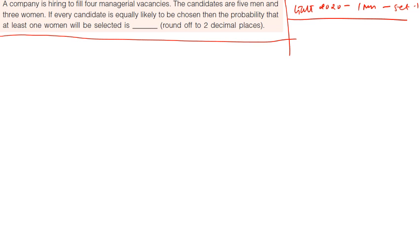Probability of X, the random variable, at least one means one or more. So instead of finding this directly, we can find one minus probability of X less than one, which means one minus probability of X equals to zero.